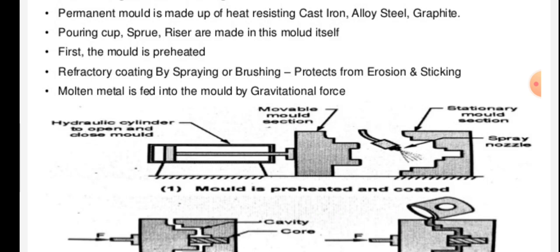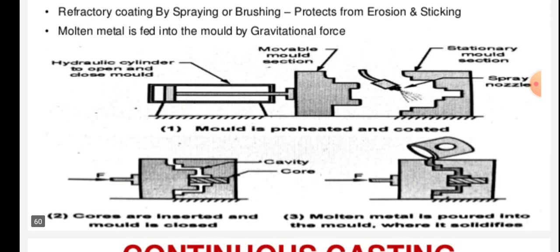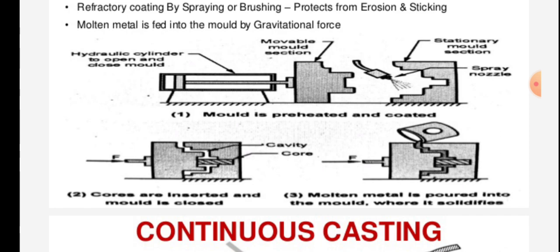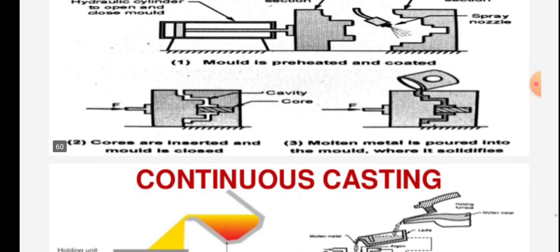A refractory coating applied by spraying or brushing protects the mold from erosion and sticking. Molten metal is fed into the mold by gravitational force. This is shown in the figure, which includes the hydraulic cylinder to open and close the mold, the movable mold section, spray nozzle, and stationary mold section. The cores are inserted, the mold is closed, and molten metal is poured into the mold where it solidifies.